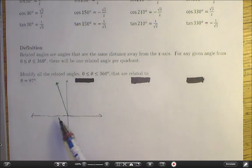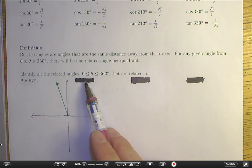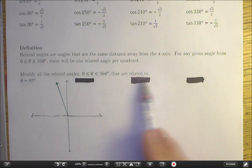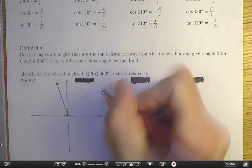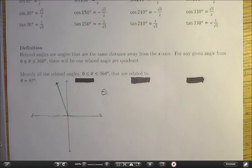Let us take a look at this example. Identify all related angles from 0 to 360 degrees that are related to 97 degrees. What I have drawn here is the Cartesian plane and the terminal arm of 97 degrees.